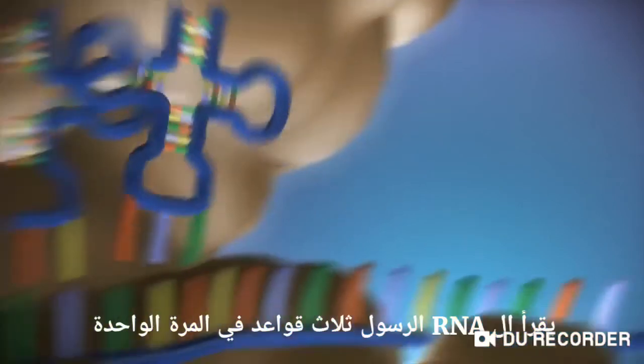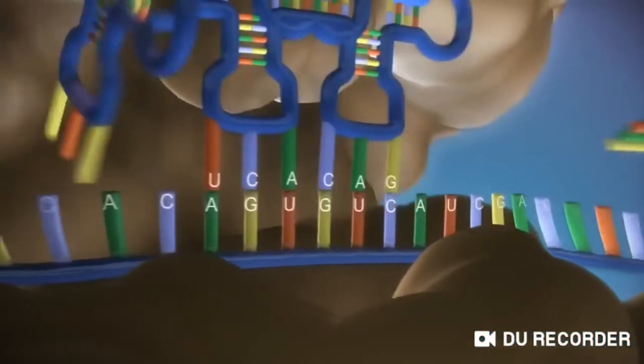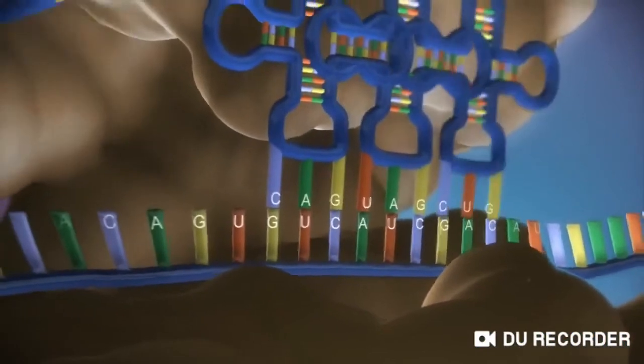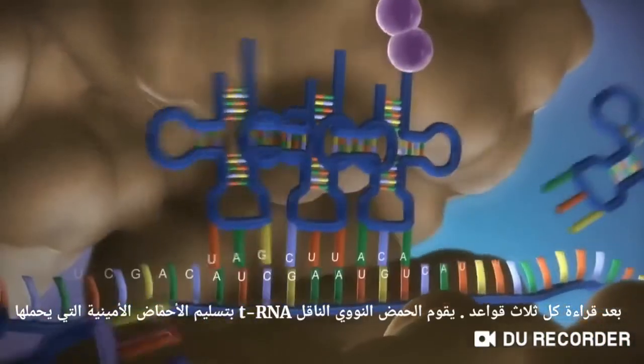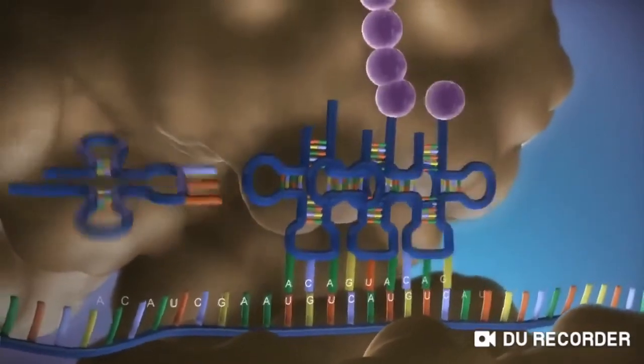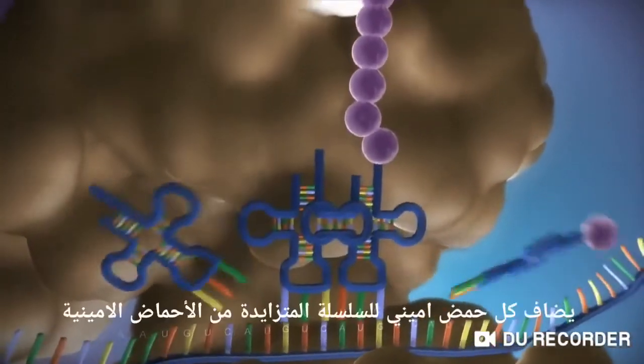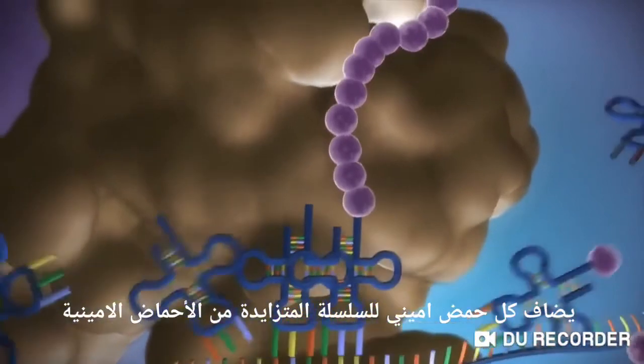The messenger RNA is read three bases at a time. As each triplet is read, a transfer RNA delivers the corresponding amino acid. This is added to a growing chain of amino acids.